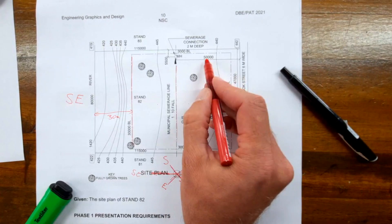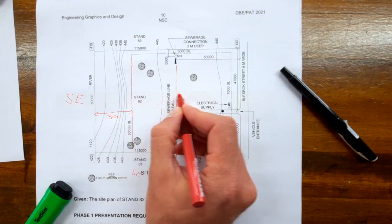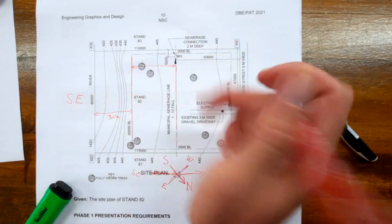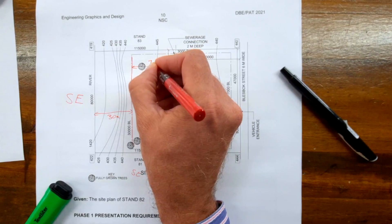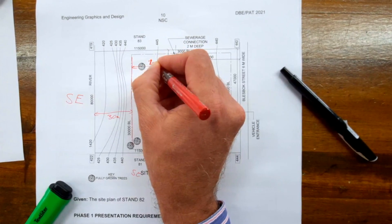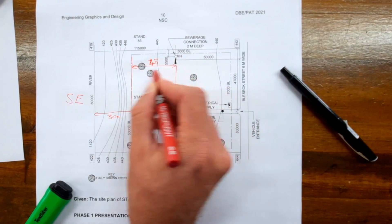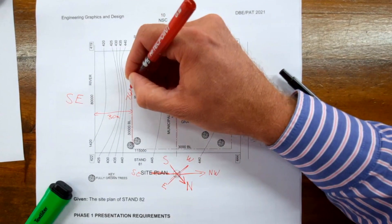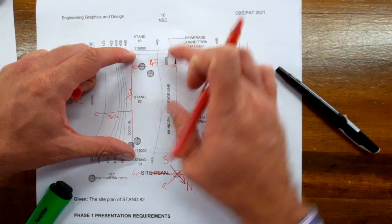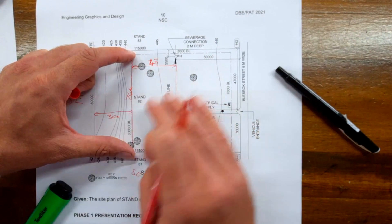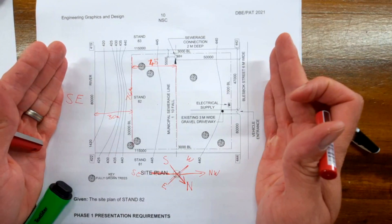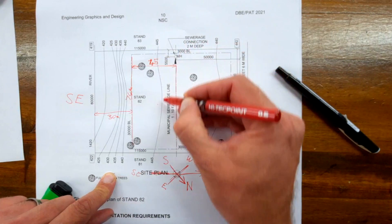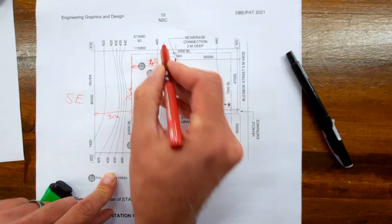Where is it positioned? Between the municipal sewer line and your southeastern boundary line. This is the 30-meter boundary line, and this distance is 50 meters. This means you have about 45 meters in this direction and about 74 meters on this side—a massive area where you can position your development.